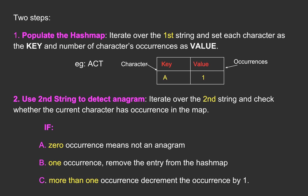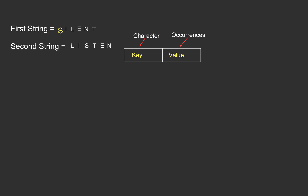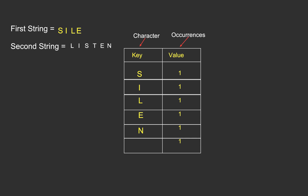Let's try to understand this approach with the help of an example. The first string is 'silent' and the second string is 'listen'. We will iterate over the first string and populate the hash map, where the key holds the character and value holds the occurrences. S has occurrence one, I has occurrence one, L has occurrence one, and so do E, N, and T. Now we iterate over the second string. We start with character L — our map contains L with occurrence one, so we remove its entry from the hash map.